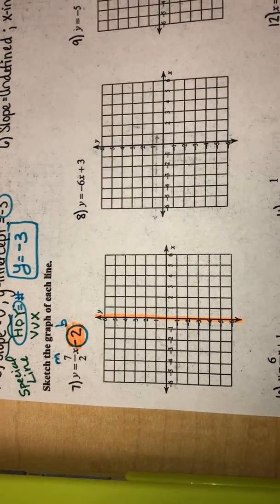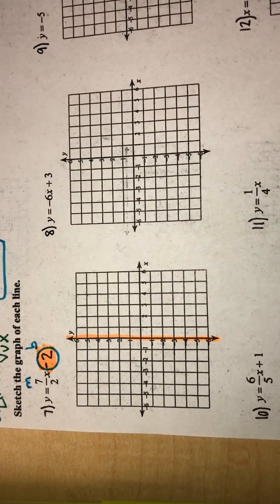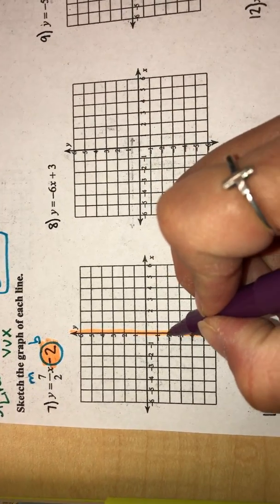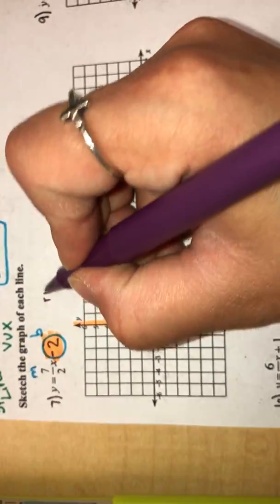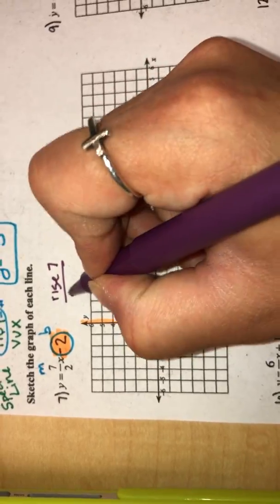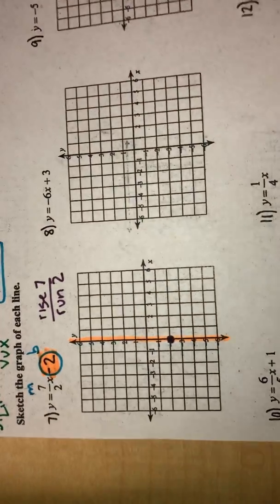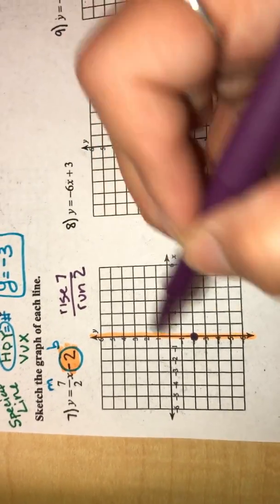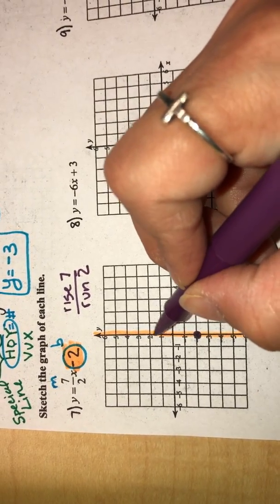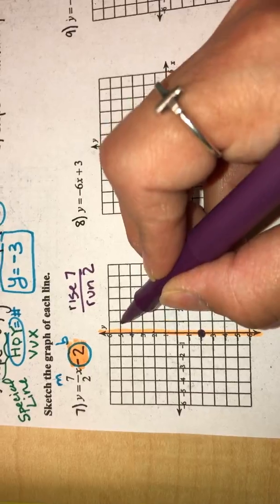So I'm going to begin by putting a dot at y equals negative two. So right here. My slope is seven halves. That tells me that I got to rise seven and I got to run two. So from right here from my y-intercept, that's where you do the rise over run. So one, two, three, four, five, six, seven, one, two.